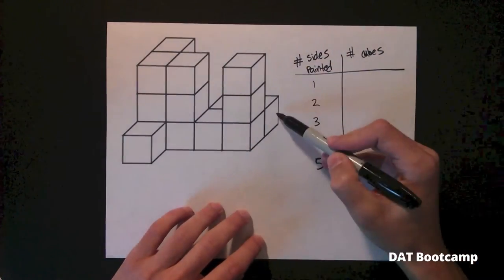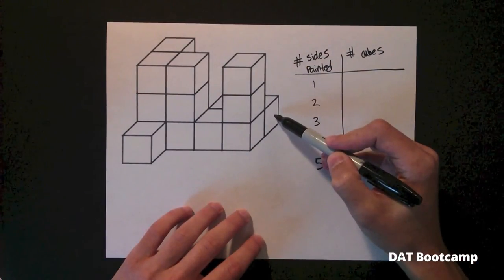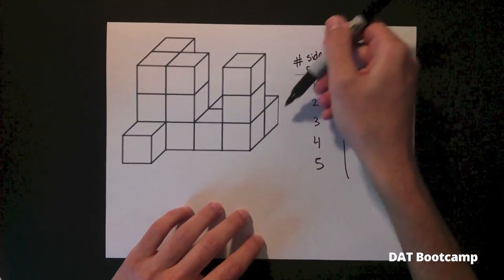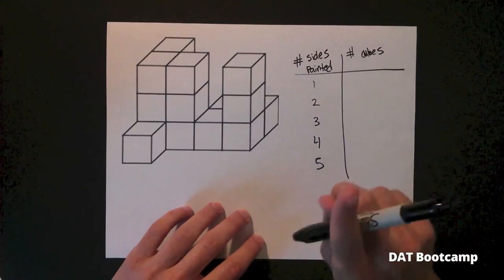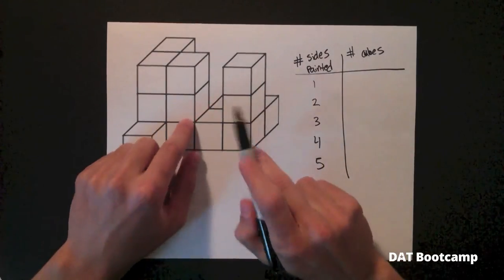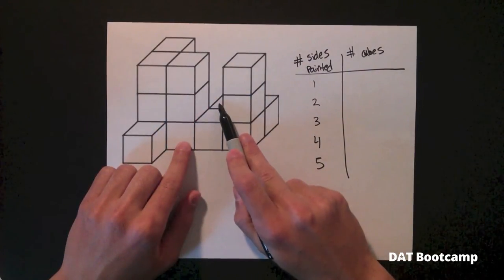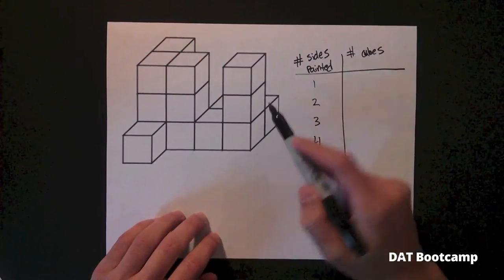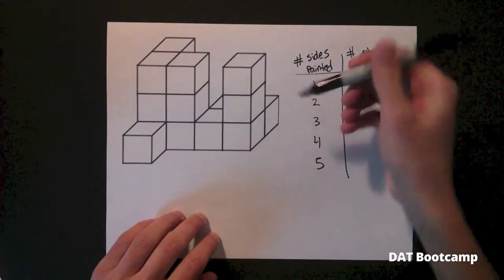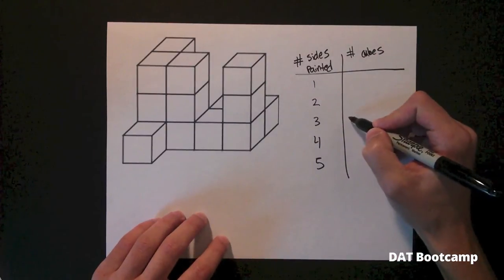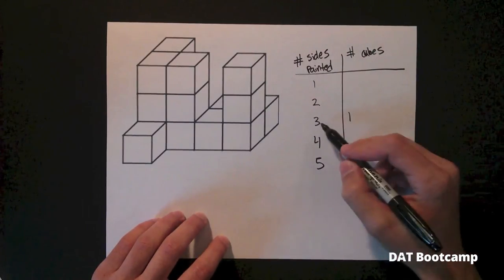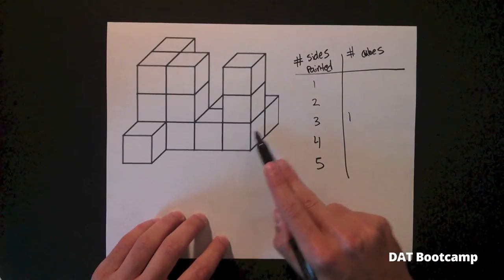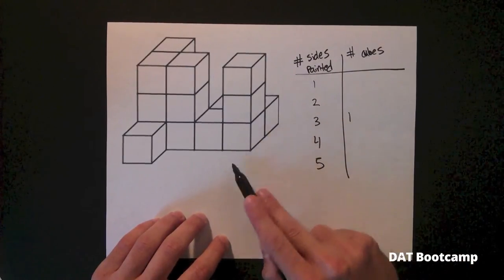Starting with the back cube: this side is painted, the top side is painted, the back side is painted, but the left is not painted because a cube is resting against it. Therefore this cube has three sides painted. Moving to the next cube: one side painted, two sides painted, bottom is never painted, the back can't be painted because there's a cube resting against it, the left can't be painted because there's a cube against it, and the top can't be painted because there's a top cube against it. This cube has two sides painted.